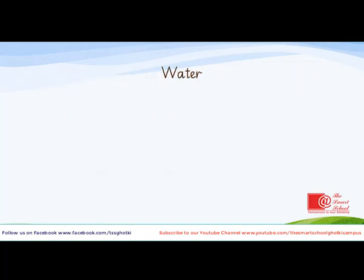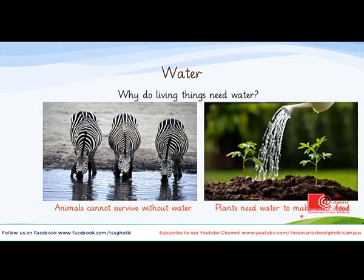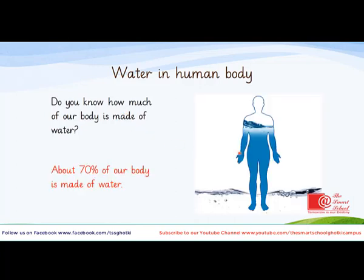Water is another important factor of life. Why do living things need water? Animals cannot survive without drinking water, and plants need water to make their food. So without water, plants and animals cannot survive. Did you know that about 70% of our body is made of water? That is how important water is for us. Without water, we will not be able to live for more than three days.